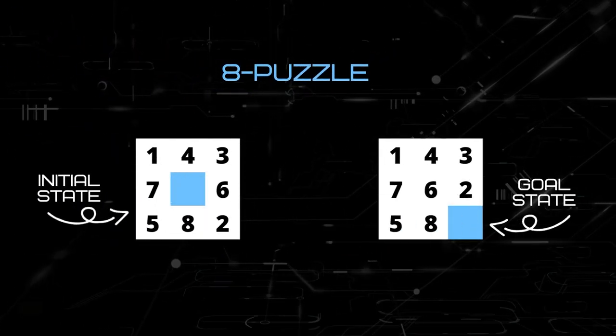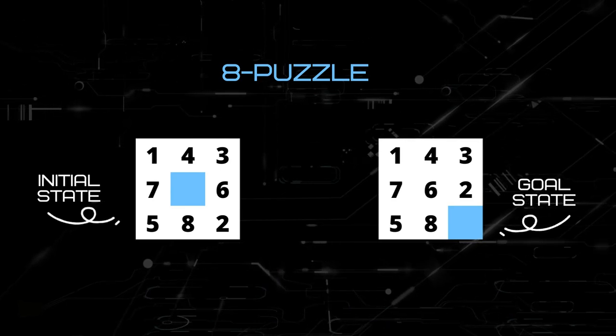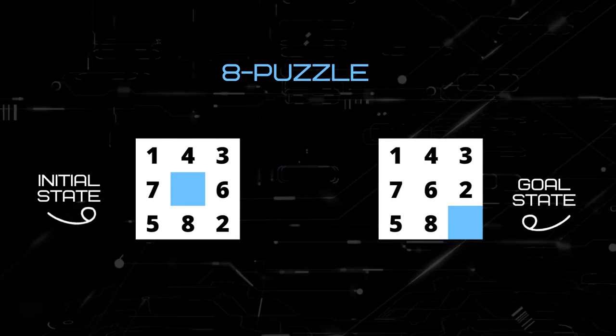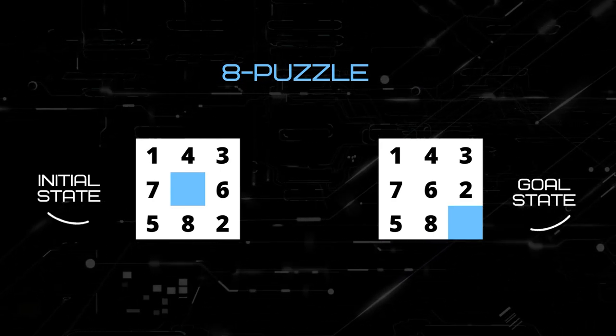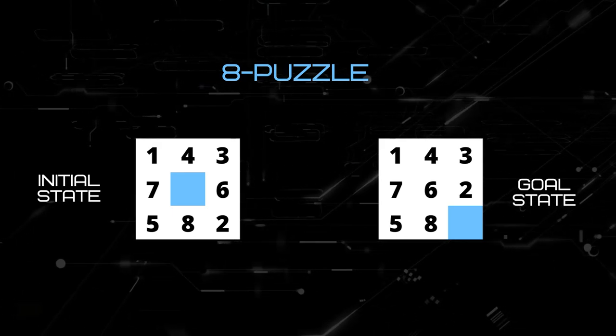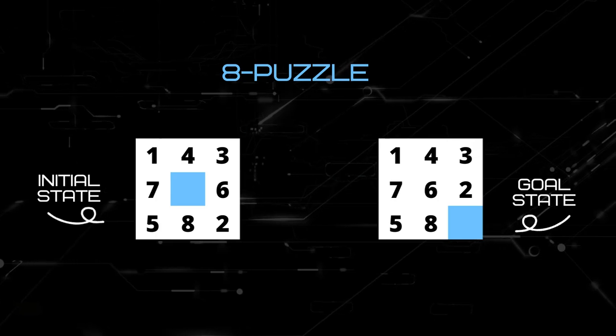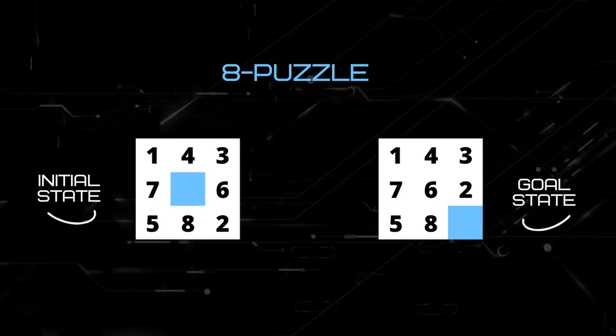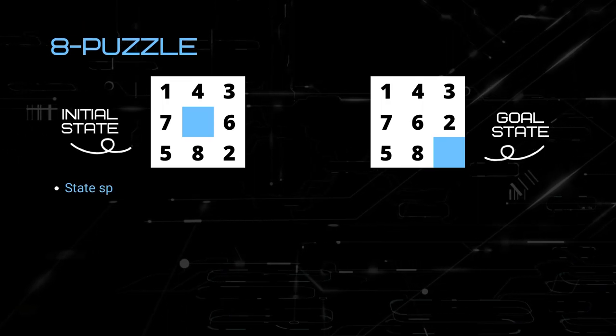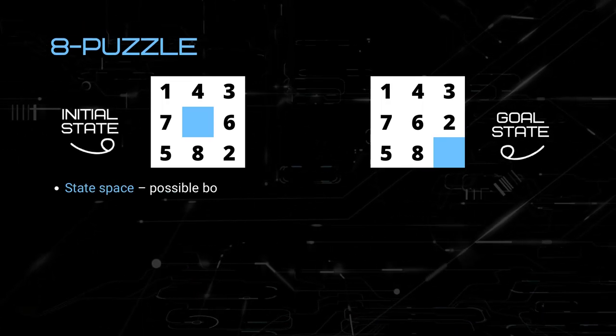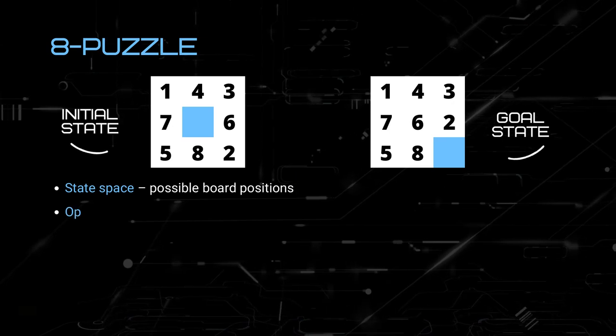Now, this is the 8-puzzle. This is another problem that is common in AI. We have the initial state and the goal state, whereby we want to move the blocks in the puzzle from the initial state to become the goal state. In this puzzle, the first board here is the initial state. The second board is the goal state. The state-space would be the possible board positions.